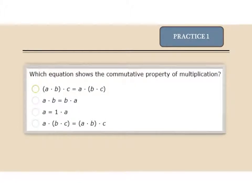Here's your first practice problem. Which equation shows the commutative property of multiplication? The commutative property states that it doesn't matter the order in which you multiply or add. So I'm looking for two numbers or two letters that are just switched around.